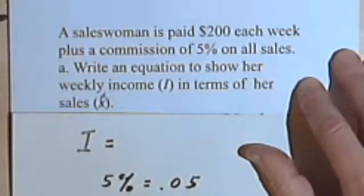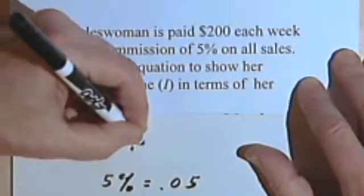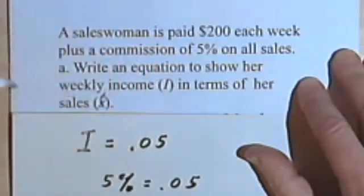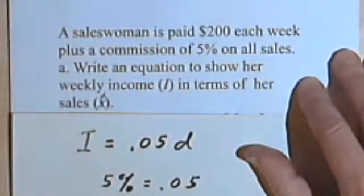If she sells $200, they'll give her 5% of $200. So we're going to take that 5%, that .05, and multiply it by her sales, which I'm calling d for dollars.